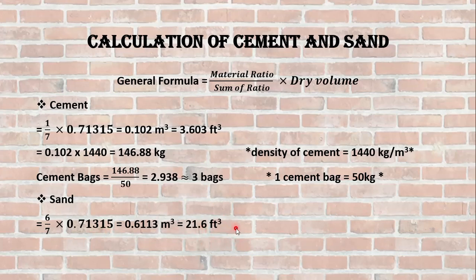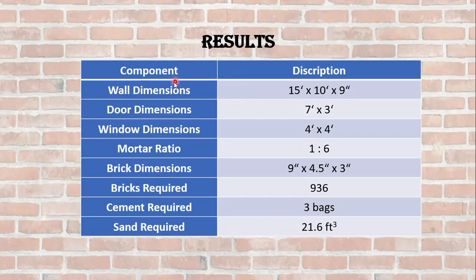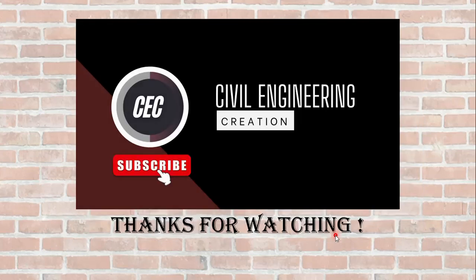These are our results: wall dimension 15 feet by 10 feet by 9 inches thickness, door dimension 7 feet height and 3 feet wide, window dimension 4 feet by 4 feet, mortar ratio 1:6, and brick dimensions are 9 inch by 4.5 inch by 3 inch thickness. So the material required: 936 number of bricks, 3 bags of cement, and 21.6 cubic feet of sand required for the construction of wall. This is our today's lecture. Thanks for watching.